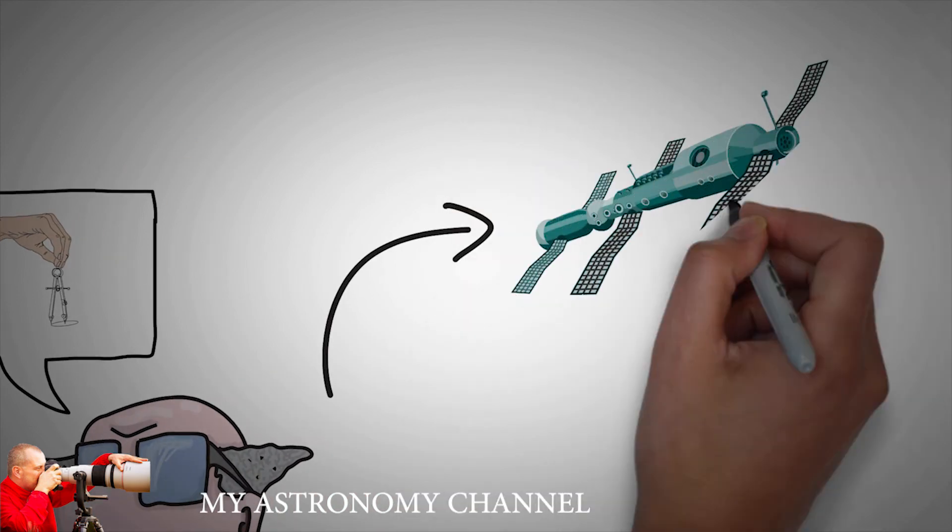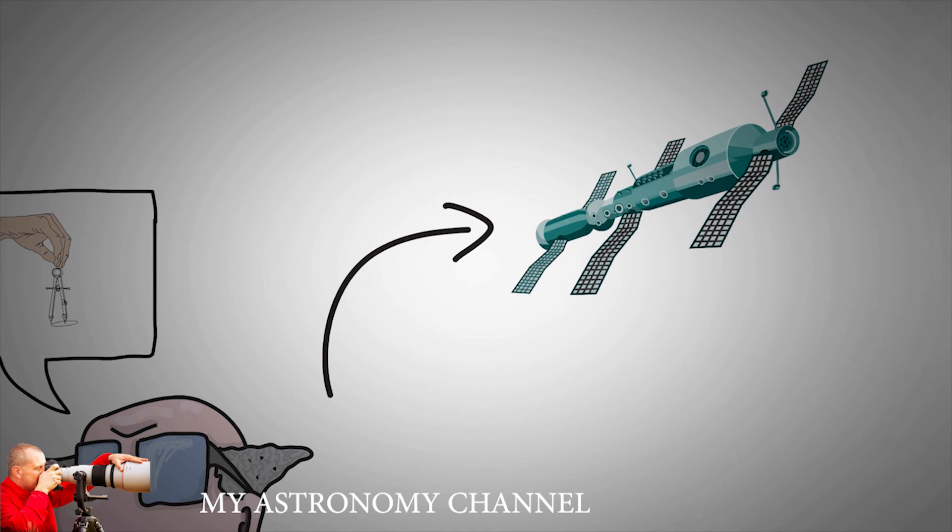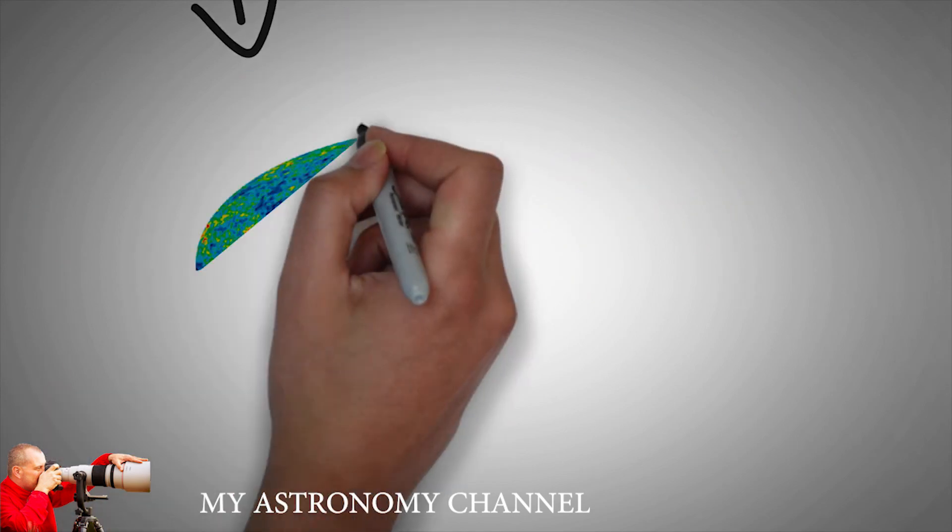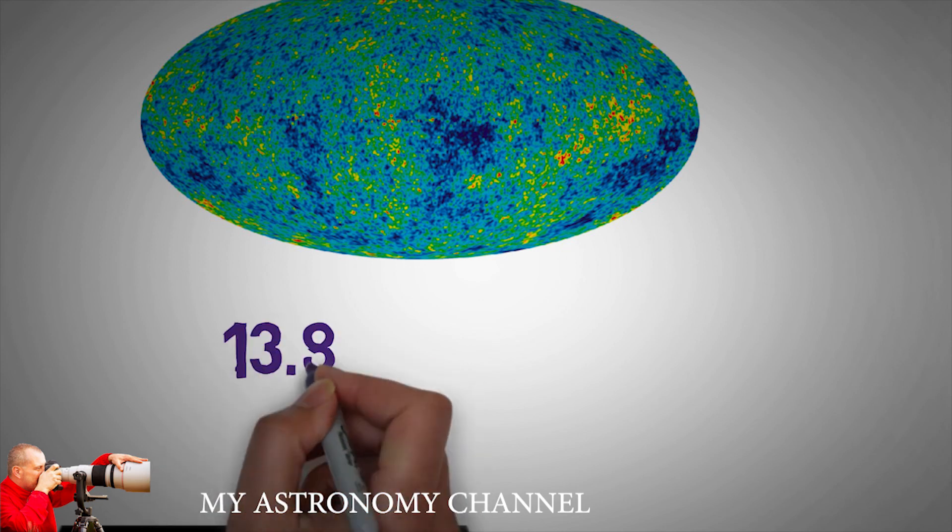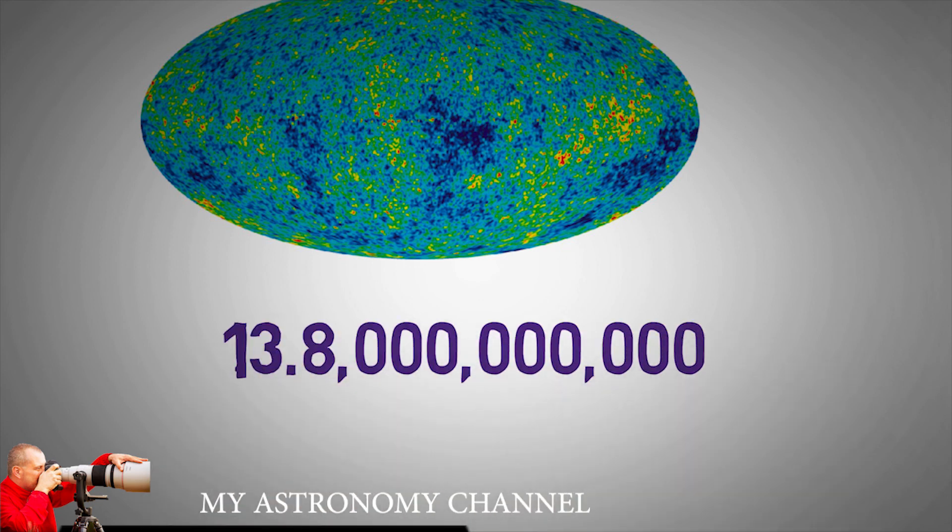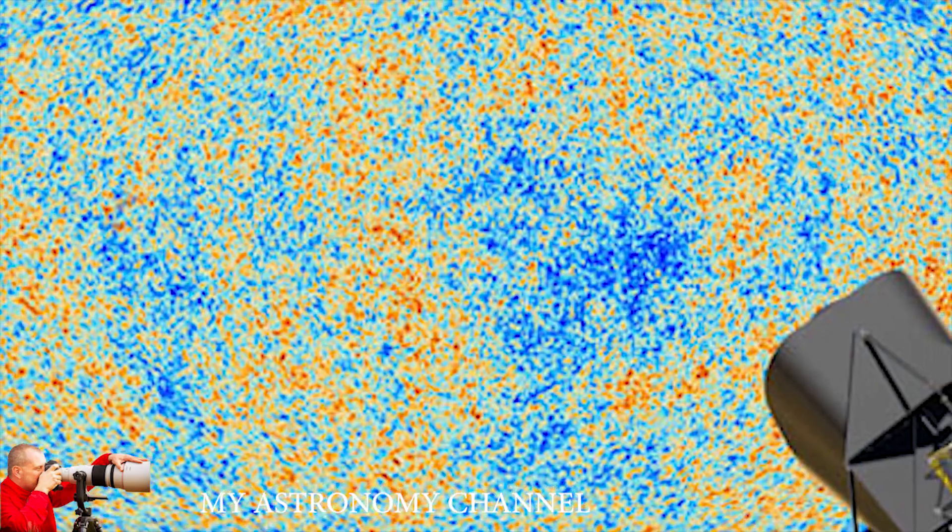In 2013, the European Space Agency's Planck space mission released the most accurate and detailed map ever of the universe's oldest light. The map revealed that the universe is 13.8 billion years old.